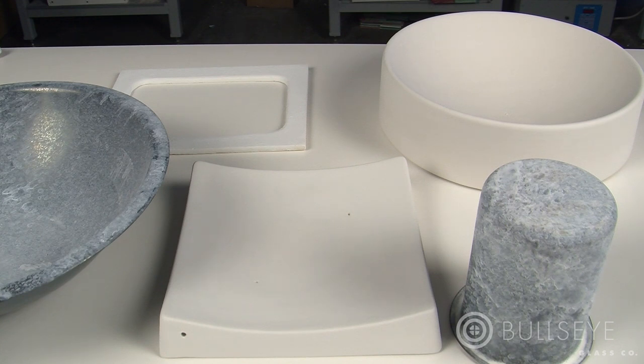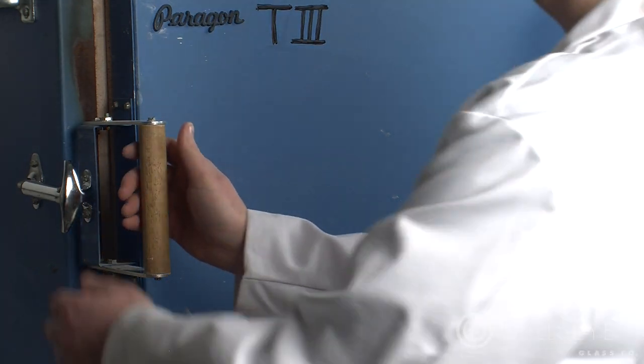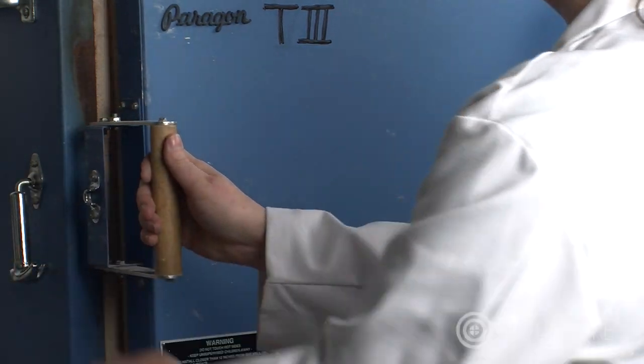In choosing a slumping mold, it is important to understand how different materials and forms behave as they are heated and cooled. When glass is heated it expands, and as it cools it contracts.